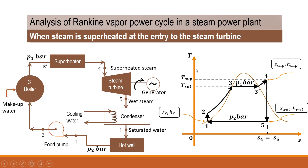The various processes are shown on the T-S diagram. Process 1 to 2 is pump work. Process 2 to 3 is the sensible heat supplied in the boiler. Process 3 to 3' is the latent heat of evaporation — at point 3 it is saturated liquid and at point 3' it is dry saturated steam. Process 3' to 4 is the heat of superheat supplied in the superheater. Process 4 to 5 is isentropic expansion in the steam turbine, during which entropy remains constant. The wet steam then enters the condenser, and process 5 to 1 changes the condition from wet steam to saturated water.